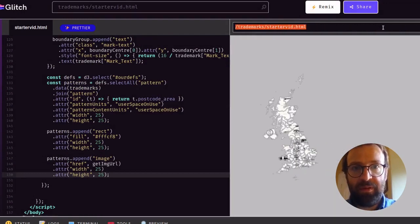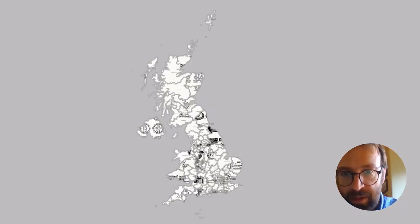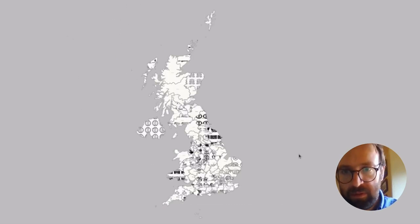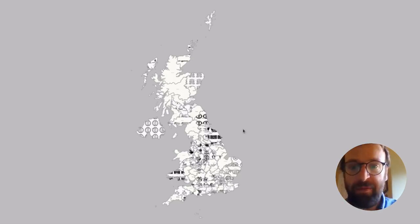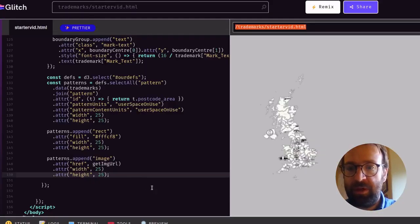We need to provide some attributes to the image elements. Excellent — we're starting to see some images appearing up here. Opening this in a slightly bigger window, we're looking quite good. I'm actually quite happy with the sizing. There's some repetition going on but we can start to see some of the imagery, which is great.